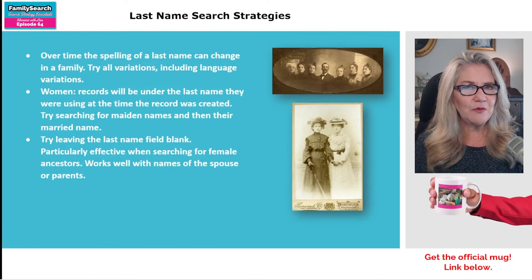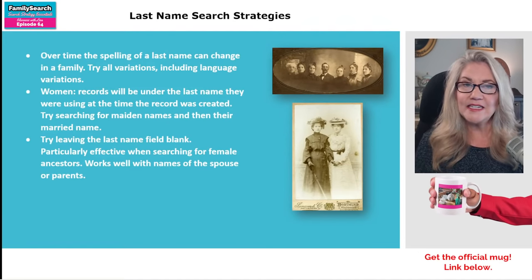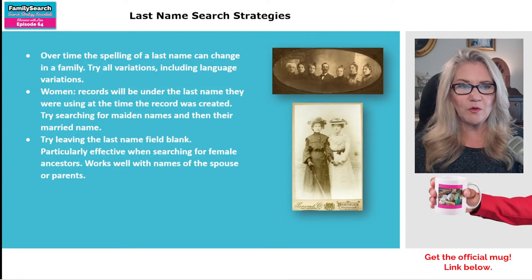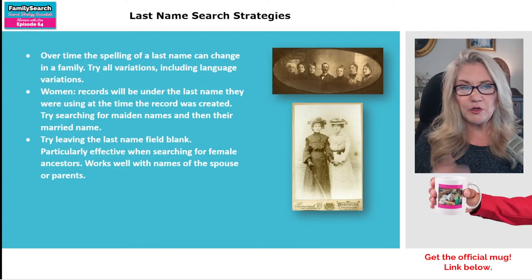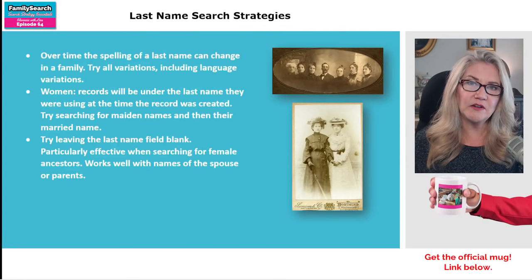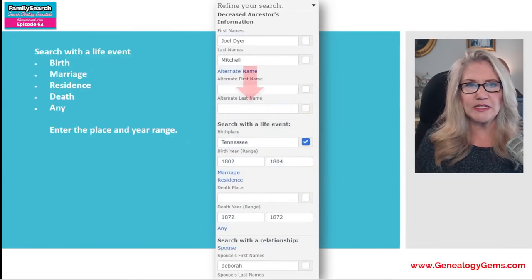Something FamilySearch recommends on their website, as I was looking through their search tips: try leaving the last name field blank. They say this is particularly effective when searching for female ancestors, and it works well with the names of the spouse or the parents. So if you leave the last name blank and just put in the first name — this would work better with a more unique name — you could also go down and start searching for spouses or parents.